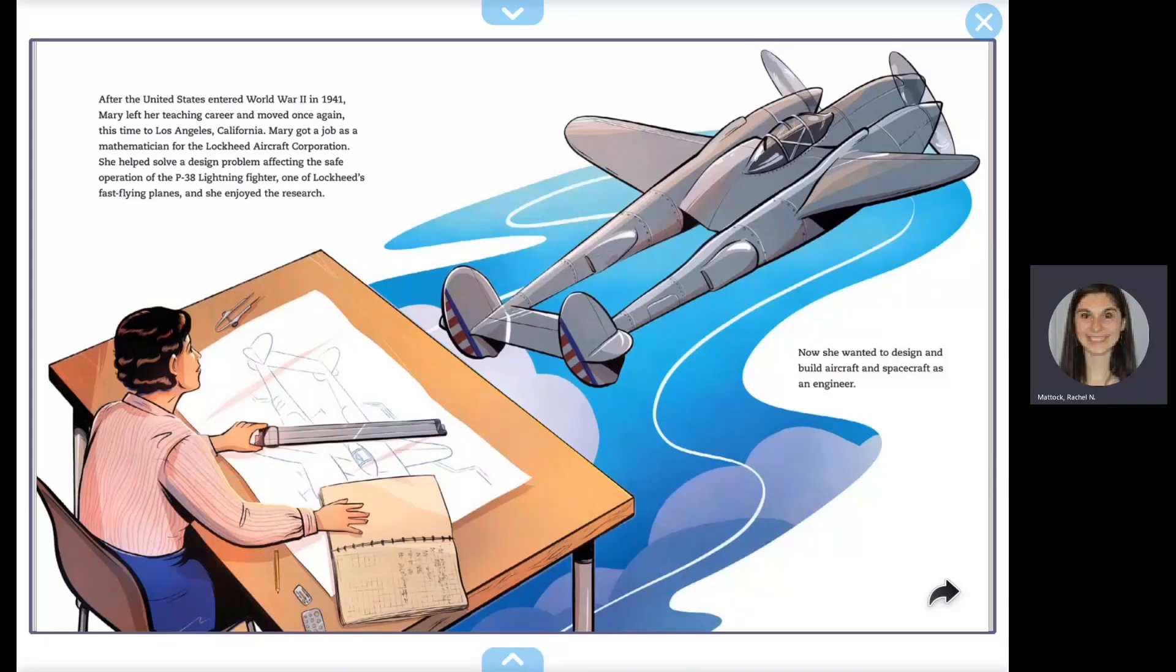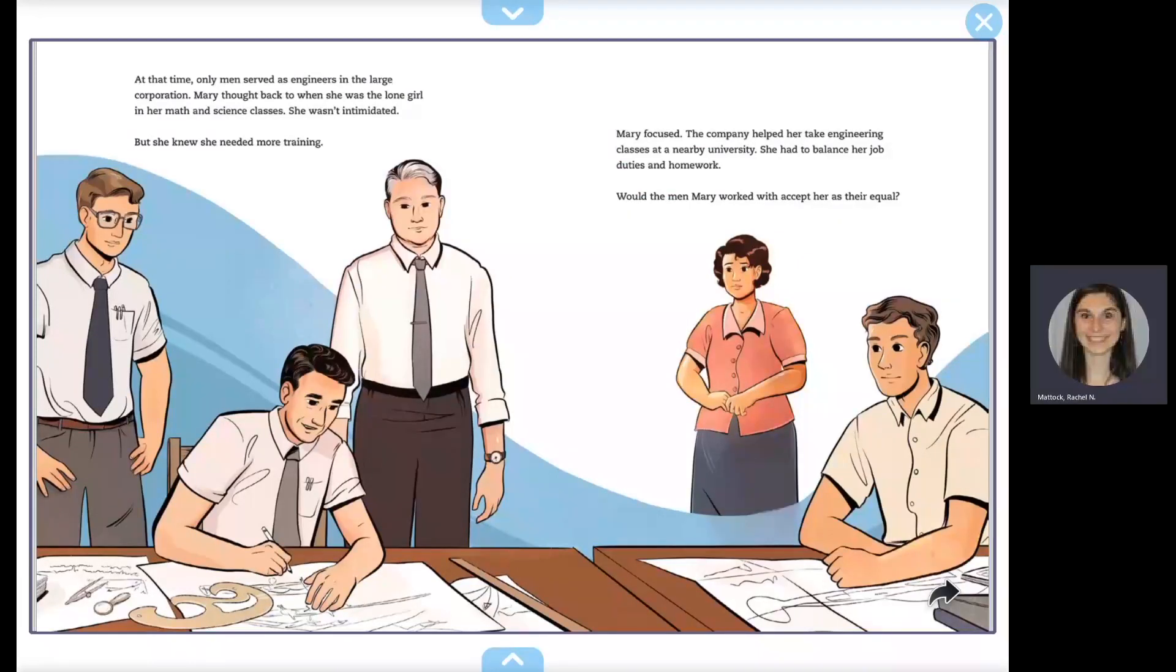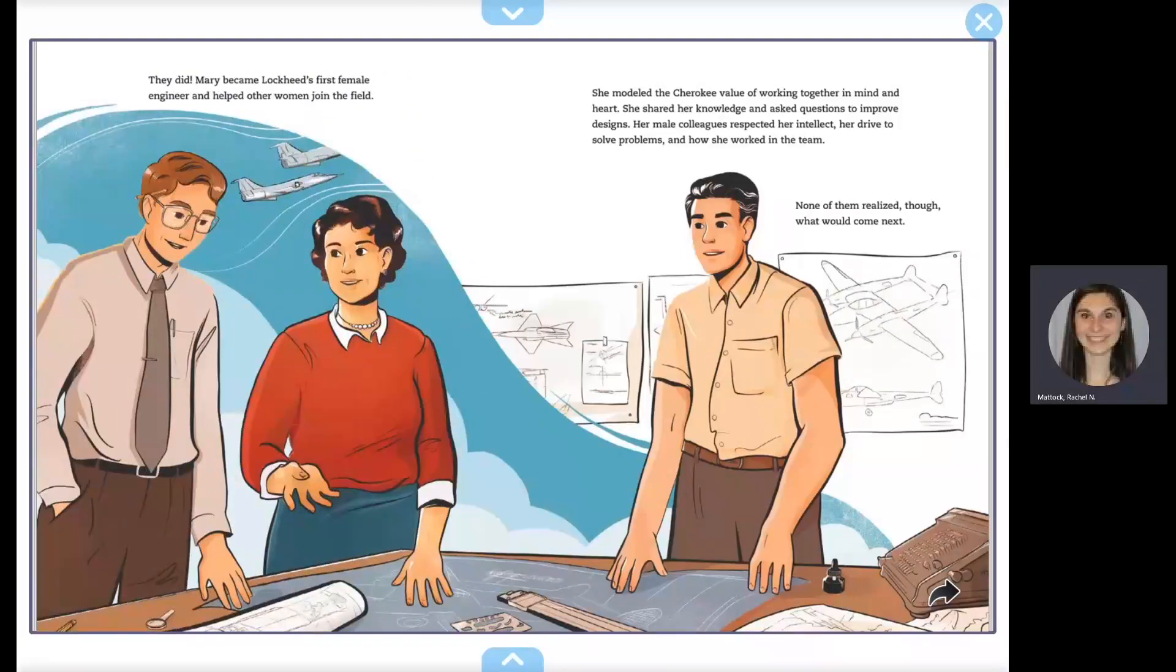She enjoyed the research, but now she wanted to design and build aircraft and spacecraft as an engineer. At that time, only men served as engineers in the large corporation. Mary thought back to when she was the lone girl in her math and science classes. She wasn't intimidated, but she knew she needed more training. Mary focused. The company helped her take engineering classes at a nearby university. She had to balance her job duties and homework. Would the men Mary worked with accept her as their equal? They did.